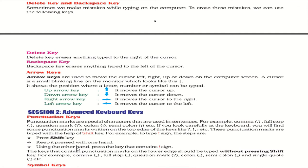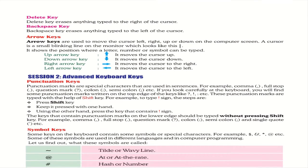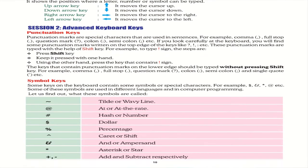To type the upper character on a key, keep the Shift key pressed with one hand and use the other hand to press the key containing that character. Without pressing Shift, only the lower character will be displayed. For example, pressing 1 alone gives '1', but pressing Shift + 1 gives '!'.